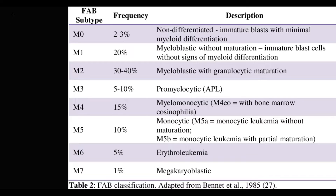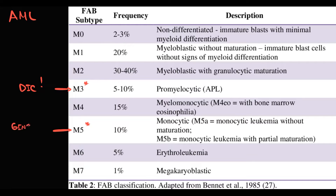We have a few subtypes of acute myeloid leukemia. Clinically they are very similar, but two leukemias have some specific features: acute promyelocytic leukemia, which causes DIC, and acute myelomonocytic leukemia, which can cause gingival infiltration.